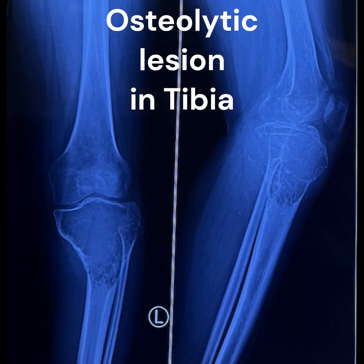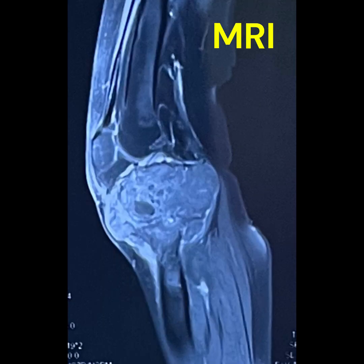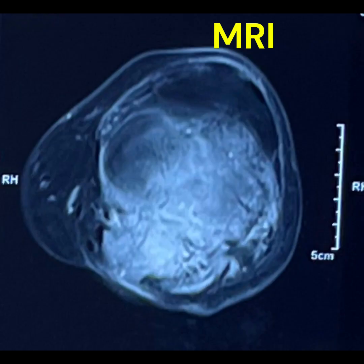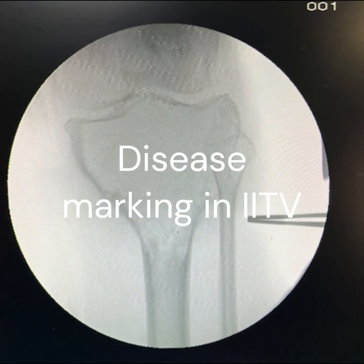Case 2 — Giant Cell Tumor of the Tibia: This patient had pain and swelling around the knee joint for a few months. The surgeon performed a radiograph of the knee joint, which showed a well-defined osteolytic lesion. This was followed by MRI, and bone biopsy confirmed it as a Giant Cell Tumor of Bone. The patient was planned for extended curettage surgery along with cementing and plate fixation after proper informed consent.